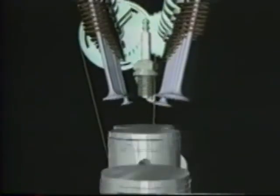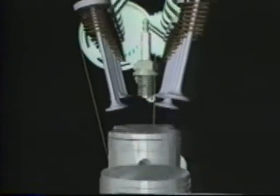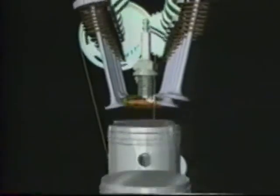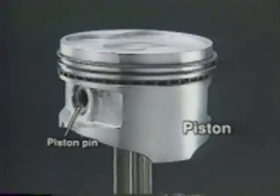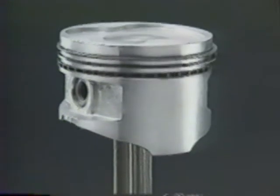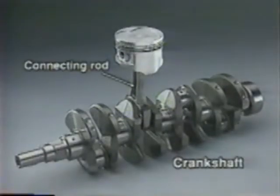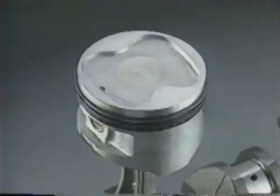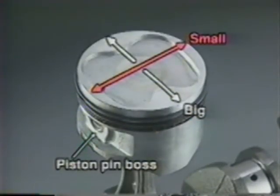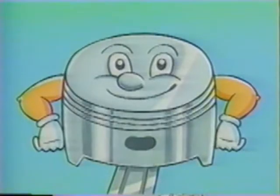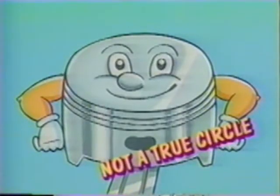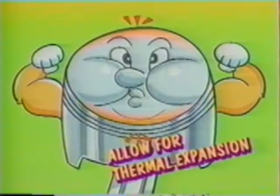The piston moves up and down in the cylinder under pressure generated by the explosion of the air-fuel mixture. The piston rotates the crankshaft via the piston pin and the connecting rod. The piston is not a complete circle, but is somewhat elliptical in cross section. The diameter in the direction of the piston pin is slightly smaller to allow for thermal expansion of the piston pin boss.